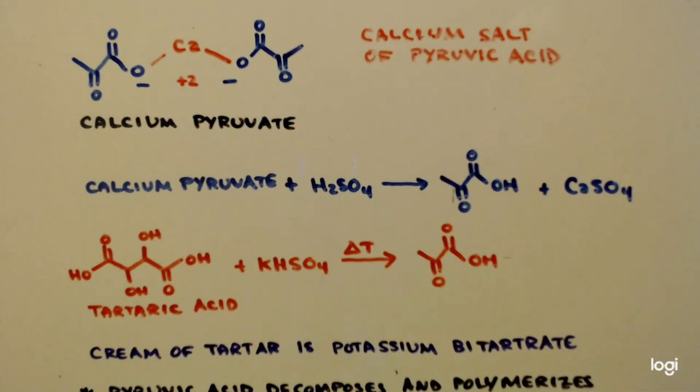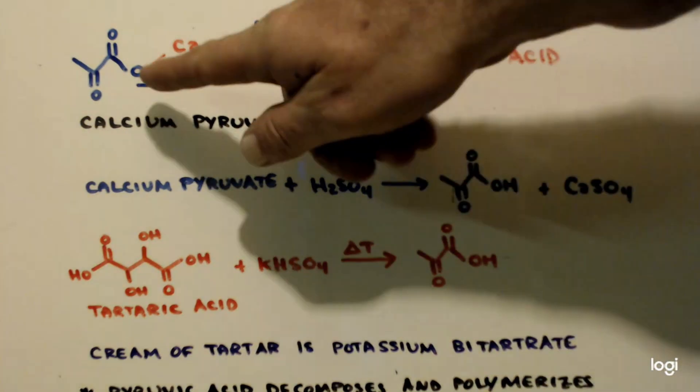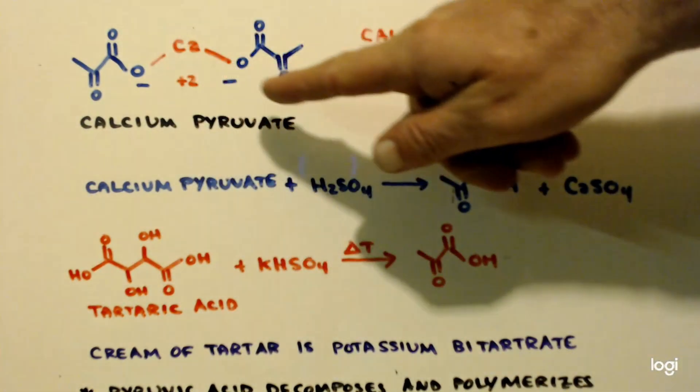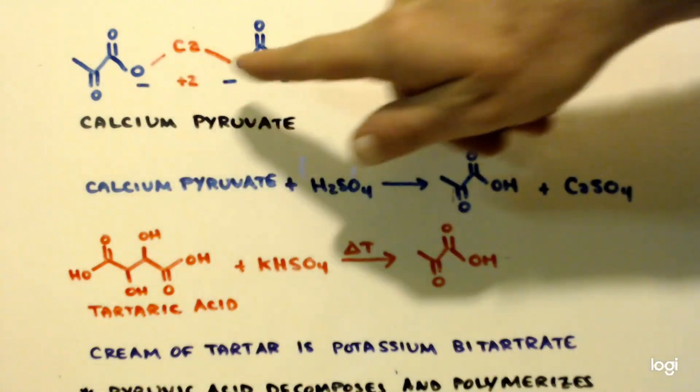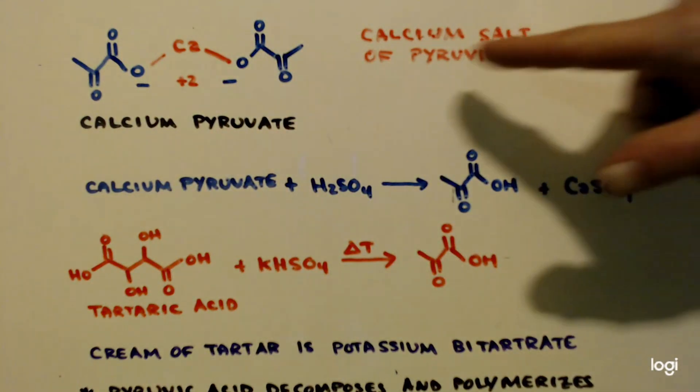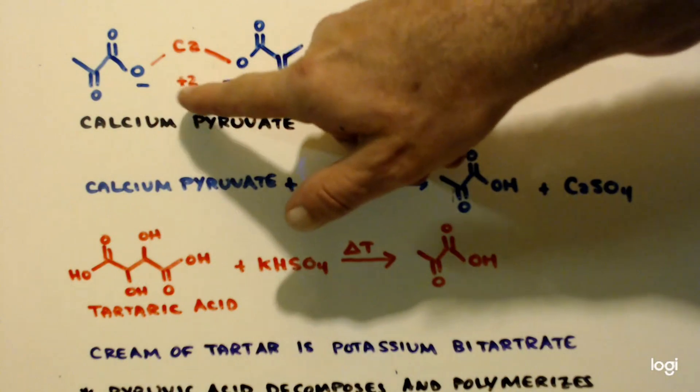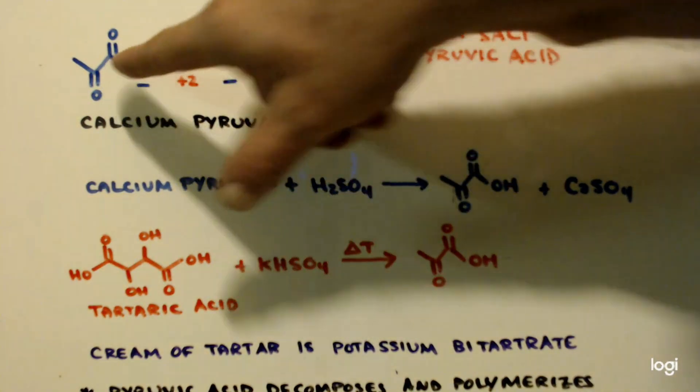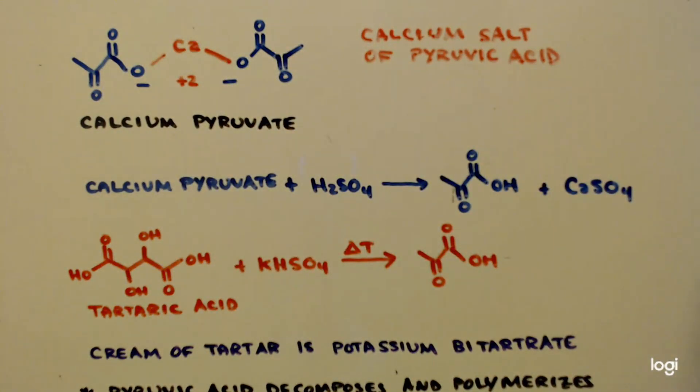Let's go over a couple things about calcium pyruvate. Here's a picture of it. You can see it's calcium with two. It's the calcium salt of pyruvic acid, but since calcium is a plus two, it has two pyruvates attached to it.